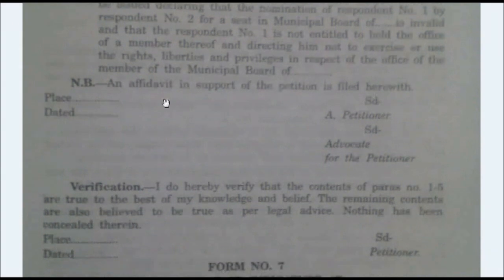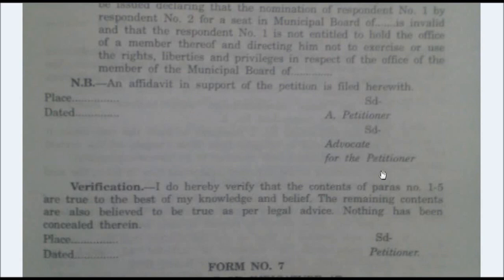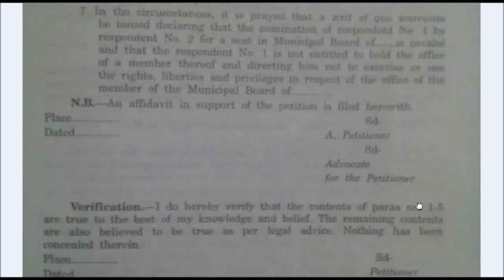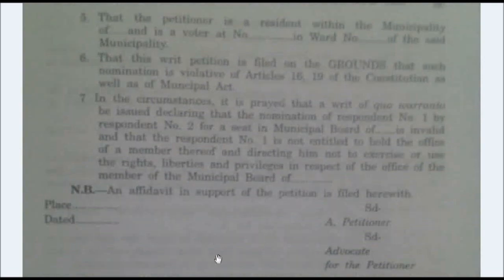After that, you have to make a note that an affidavit has been attached herewith. On the left-hand side, mention the place and date; on the right-hand side, the petitioner's signature or the advocate's signature. After that comes the verification section, where you mention that each and every ground stated in this writ is correct to the petitioner's knowledge and belief. Again, on the left-hand side place and date, and on the right-hand side the petitioner's signature.